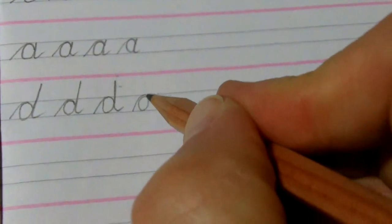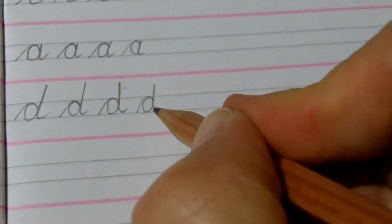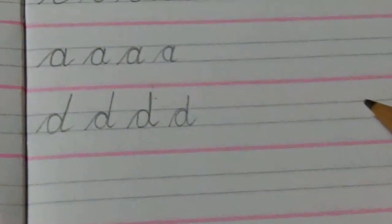Up, over, back, round, up, down. About there is probably better for a D.